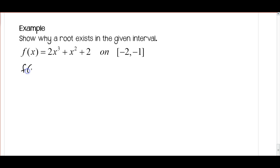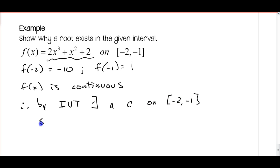So we are going to find the value of the function at the intervals. f(-2), if you substitute that in, you are going to get -10. f(-1) is equal to 1. Notice we are going from negative to positive, so at some point we have got to cross 0. And we know that f(x) is continuous because it is a polynomial function. Therefore, by the Intermediate Value Theorem, there exists a c on the interval [-2, -1] such that f(c) is equal to 0.